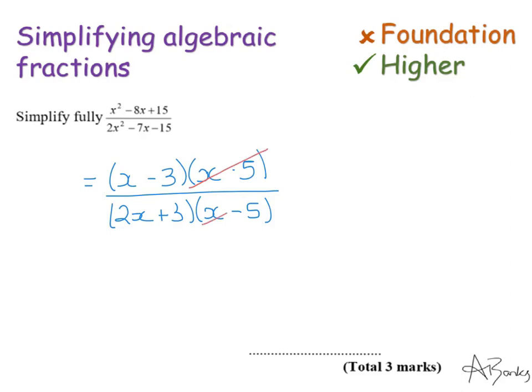I've got two things that cancel out and this time it's the x minus 5, so I'm just going to cross through those. And I'm left with x minus 3 and 2x plus 3. And that is my simplified answer.